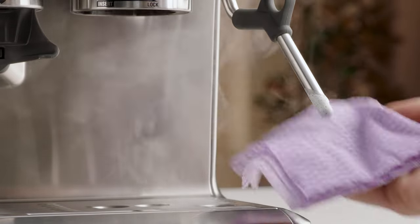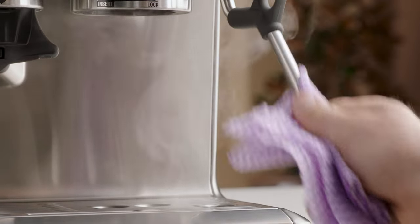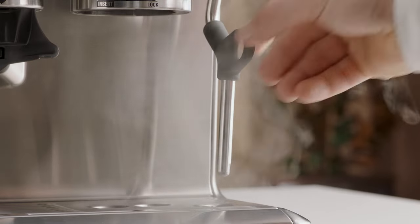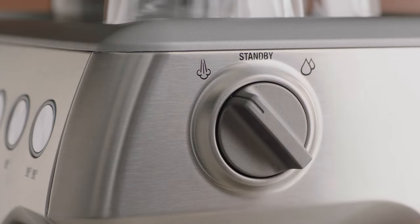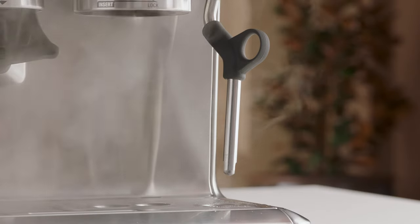To clean the steam wand after use, wipe it down thoroughly with a damp cloth. Direct the steam wand back over the drip tray and set the steam dial to the steam position for a few seconds. This will clear any remaining milk inside the wand.